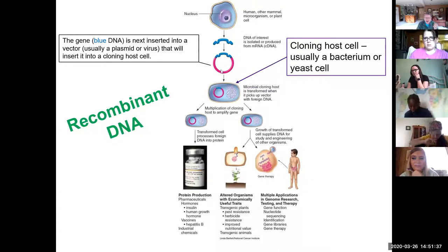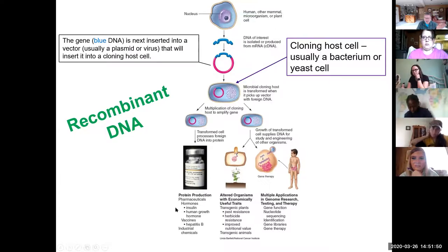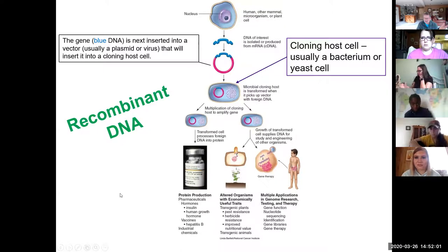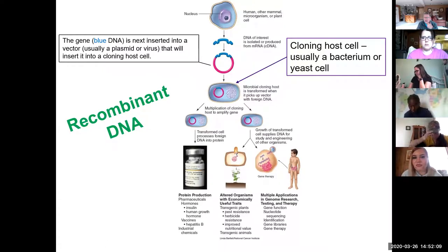Prior to this technology, if you wanted to develop insulin, you had to use animals — very time-consuming and expensive. You can do this with little cells in a big vat. It's a lot quicker and a lot cheaper. And is there any difference between this insulin chemical and the insulin that came from the cow or the pig? No — same chemistry. It all boils down to money, but it's a good thing.